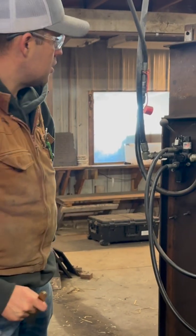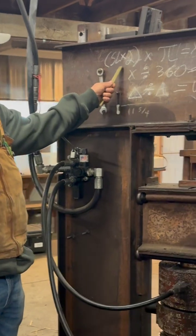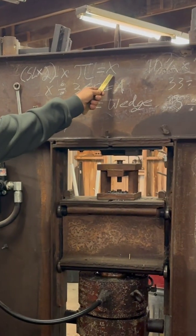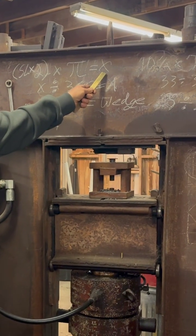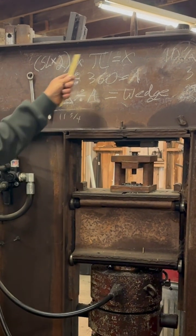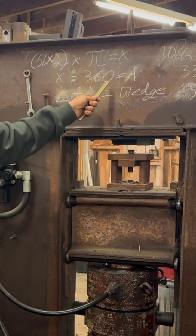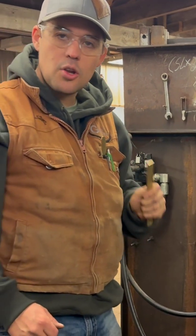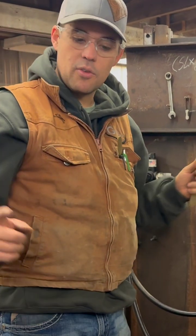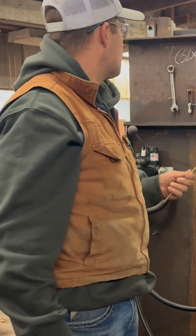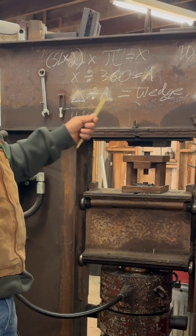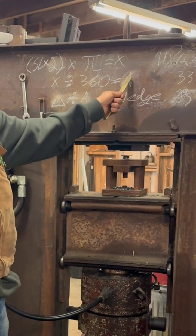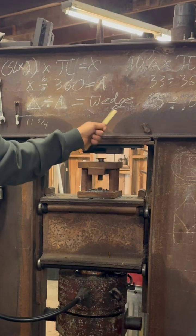The equation would look like this: shoe length in inches times two times pi equals my circumference. If I take X and divide that by 360, that equals A, which gives me one degree over five and a quarter inches in this equation. That delta of a quarter inch, divided by this number, gives me the degrees of wedge.